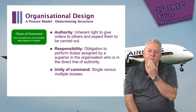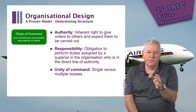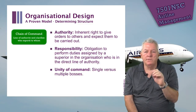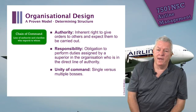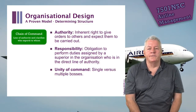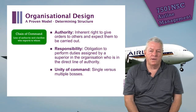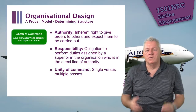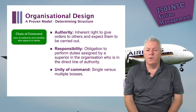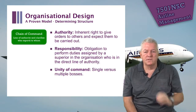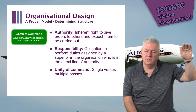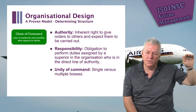Chain of command covers authority — the inherent right to give orders and expect them to be carried out — and responsibility, the obligation to perform duties assigned by a superior in the direct line of authority. There's also unity of command. A problem in today's organic organizations with team-based approaches is that someone may work for multiple bosses, causing conflict of expectations. Unity of command means one person should understand who they are ultimately accountable to on a day-to-day basis.